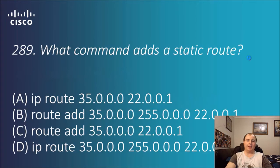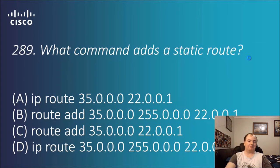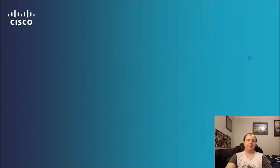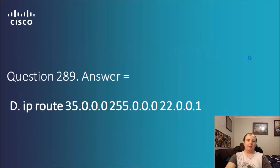Question 289: what command adds a static route? Options: IP route, route add, route add, IP route. You're probably thinking A or D. Option A has no subnet mask, which is a big no-no, and 'route add' doesn't sound too legitimate. So the answer here is D: IP route, address, subnet mask, address.